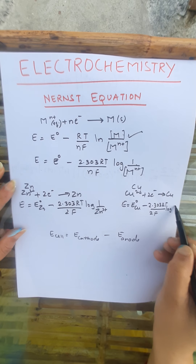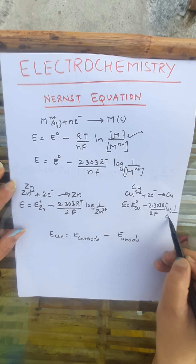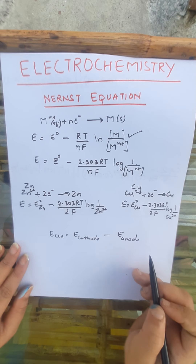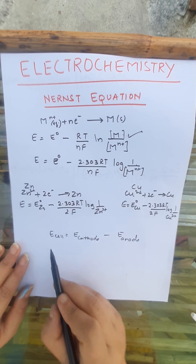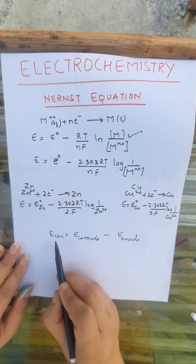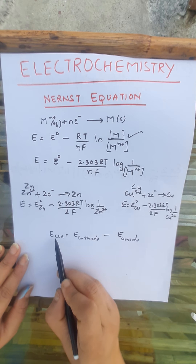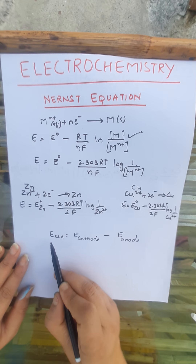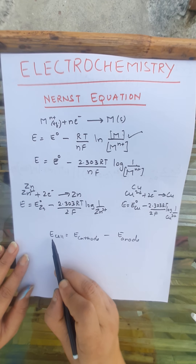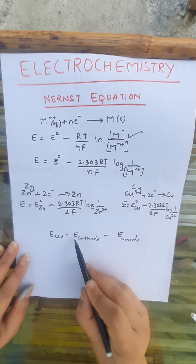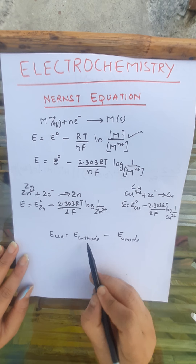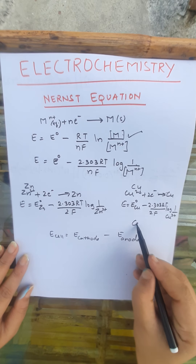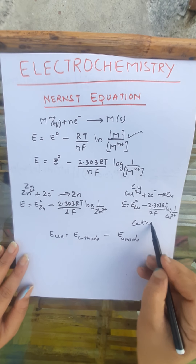For copper, we write the same form. We consider reduction because electrode potentials are written as reduction potentials. So we get: E = E°(Cu) minus 2.303RT/2F times log(1/[Cu²⁺]).